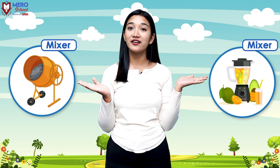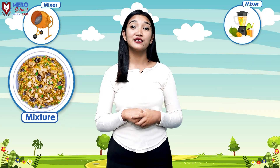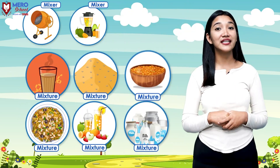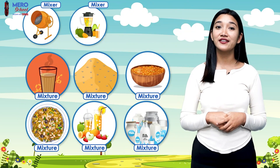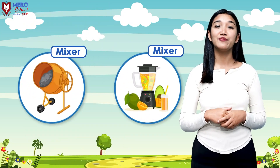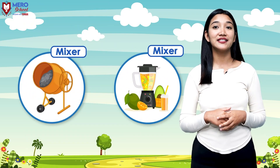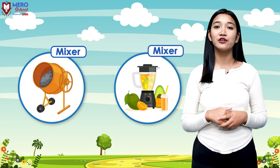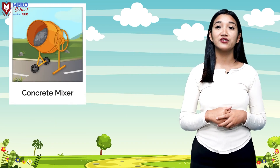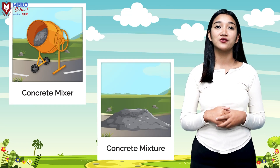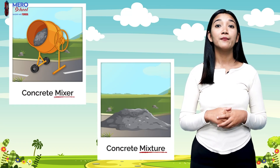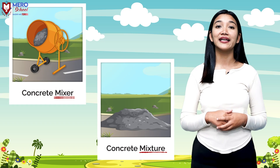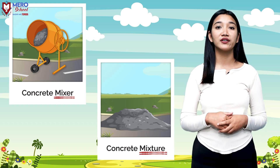This is a mixer, this is also a mixer, and this is a mixture, and all these are also mixers. I will make a mixer, in the sense that I will work on this mix. Concrete mixer — I will make a concrete mixer. Do you know the spelling? We will use the equipment to mix the mixture.